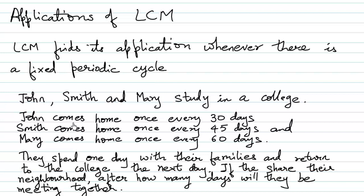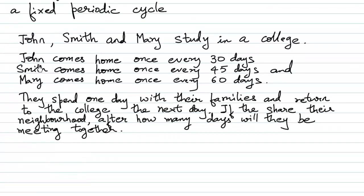To understand this, let us take the example of John, Smith and Mary. They all study in a college but in different colleges. John comes home once every 30 days, Smith comes home once every 45 days, and Mary comes home once every 60 days. They spend one day with their families and return to college the next day.